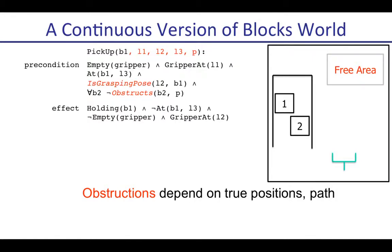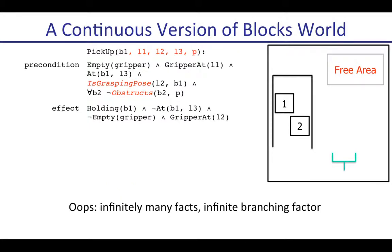This is very accurate — the precondition says there should be no obstruction in the path, and in this case that's not satisfied, so you cannot actually pick up block one. Everything seems fine and we've described this domain accurately. But the problem with this specification is that because of these continuous arguments, our state is continuous — we need infinitely many facts to express it — and we also have an infinite branching factor because our actions have continuous arguments.